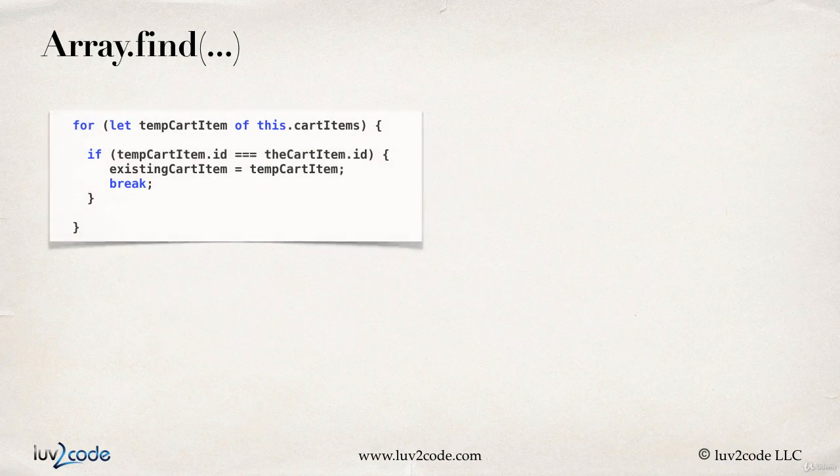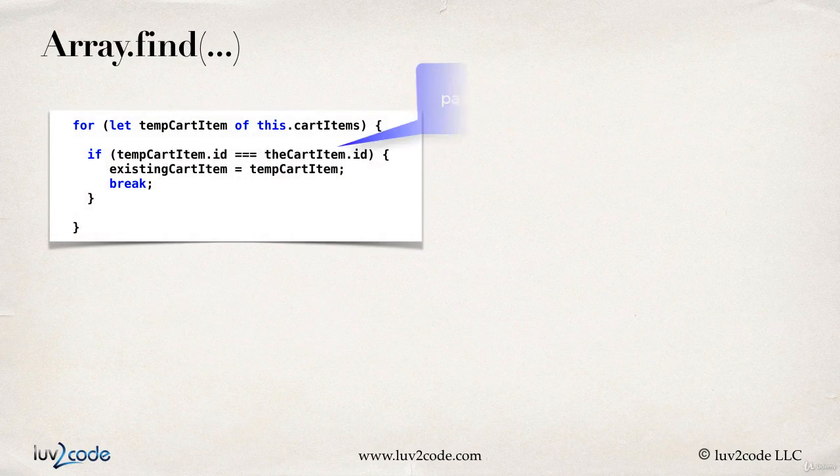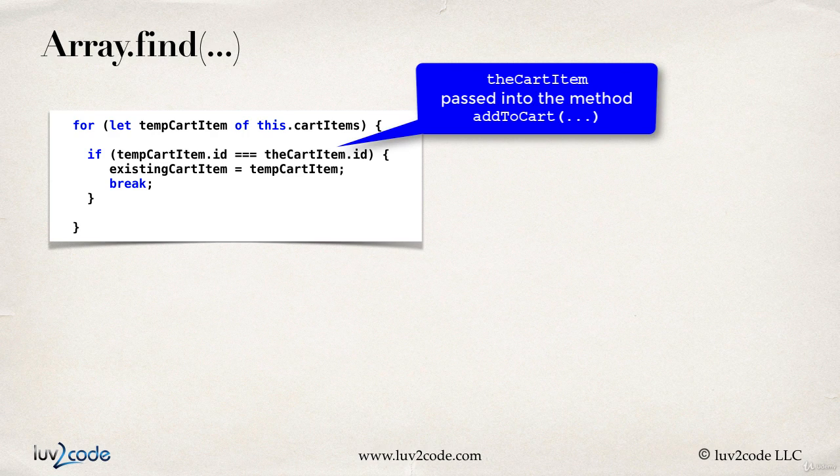Alrighty, so let's look at some coding for this. And now just a quick heads up, we'll reference the cartItem. That's an element that's passed into the method for add to cart. So that's the actual element that we're searching for in our shopping cart.